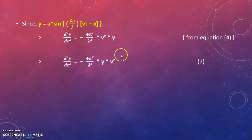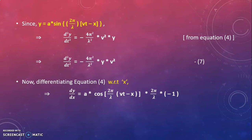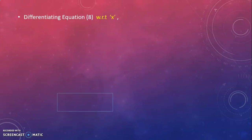Now differentiating equation 4 with respect to x, we get dy/dx = a cos((2π/λ)(vt − x)) × (2π/λ) × (−1).